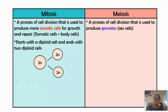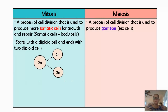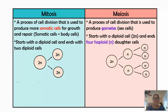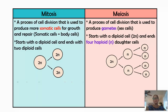In mitosis, the first cell you start with is a diploid cell, and at the end of mitosis you end with two identical diploid cells, identical to the parent cell. In meiosis, the cell you start with is called a germ cell — that cell is also a diploid cell — but it's going to undergo two rounds of division to end with four haploid cells.